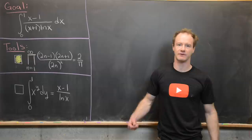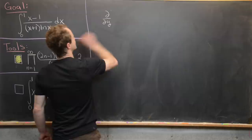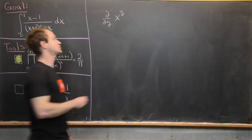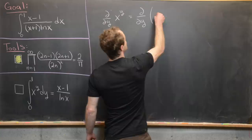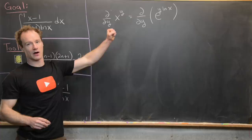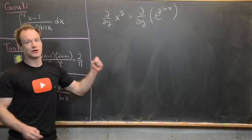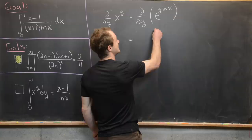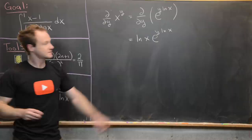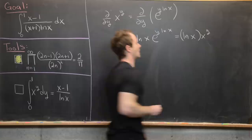For the second tool, take the partial derivative with respect to y of x to the y, viewing x as a constant. Rewrite x to the y as e to the y times the natural log of x, since e to the natural log of x equals x. Applying the chain rule, the derivative is e to the y times the natural log of x, times the natural log of x. Rewriting back, that gives the natural log of x times x to the y.